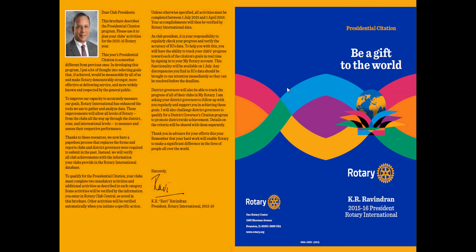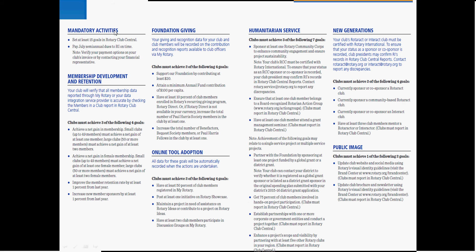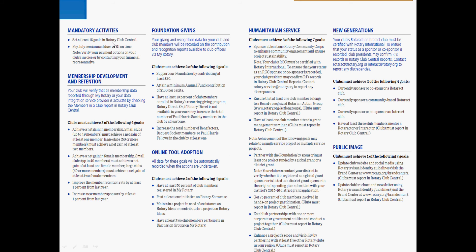President Ravinderan has set out an ambitious but doable Presidential Citation, and clubs can use it to set up their goals for the coming year as well as track their progress. For the very first time, he's making good use of Rotary Club Central, a tool we've had for several years but now have even more need to use. We're going to talk about all of the activities in various areas: mandatory activities, membership development and retention, foundation giving, online tool adoption, humanitarian service, new generations, and public image.